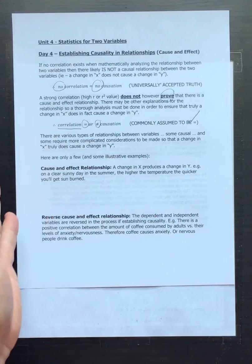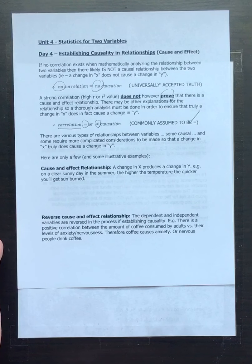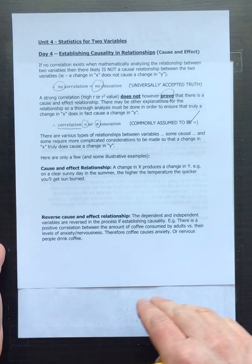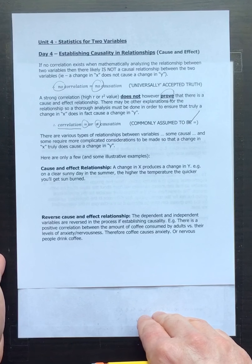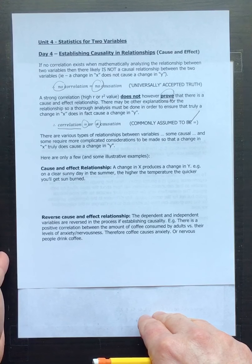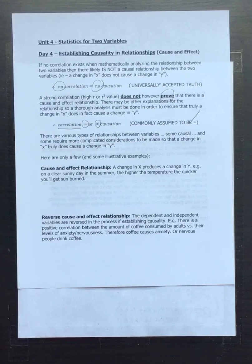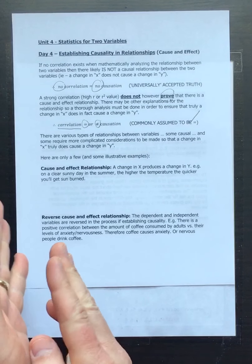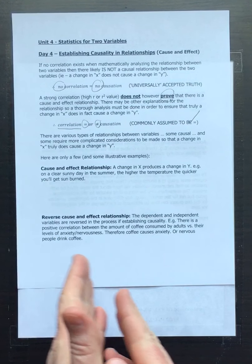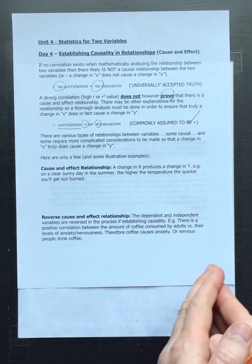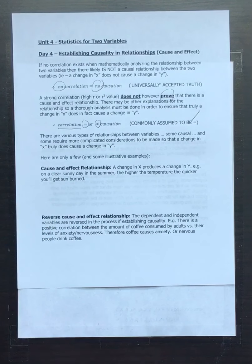If your unit one test mark was low, you might spend more time studying for the next test to prepare yourself. So a change in y — how well you did on the test — actually causes a change in x — the amount of study time. That's when there's a reverse relationship.